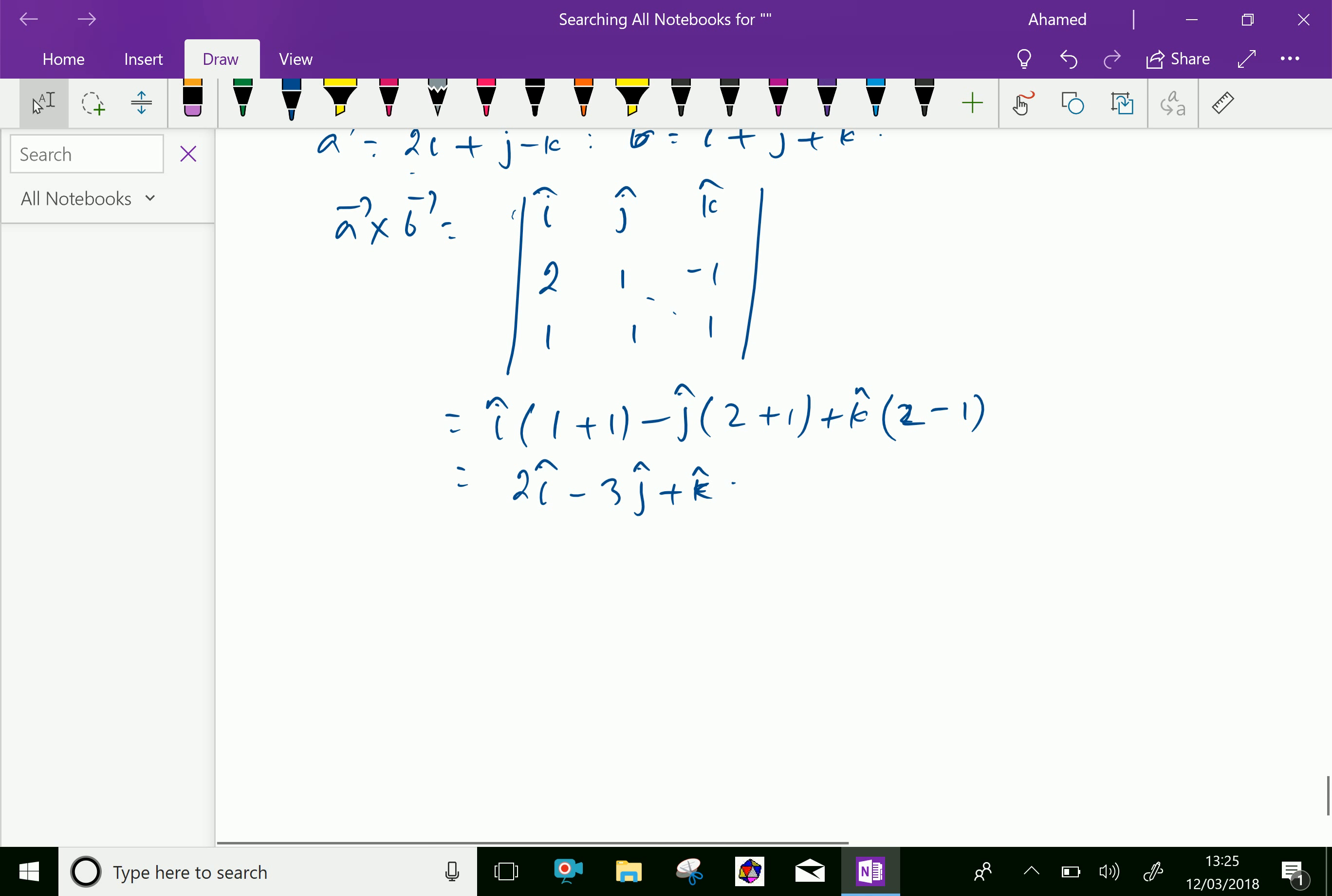The modulus we can find vector a cross vector b equal 2 square plus minus 3 square plus 1 square equal 4 plus 9 plus 1 equals square root of 14. Not 14, it is 19.